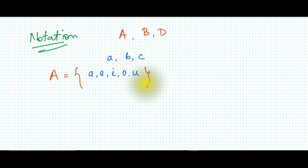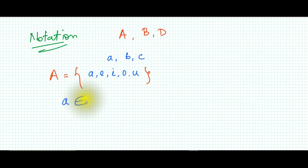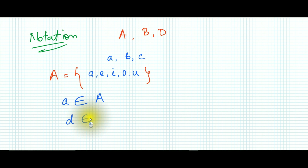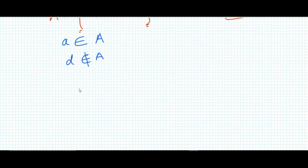This is the set of vowel letters. If A is a set of the vowel letters of the English alphabet, then you can write 'A belongs to set A'. If there is a letter which is not a member of set A, for example D, we write 'D does not belong to set A'. I have already discussed this in the first part of the video.